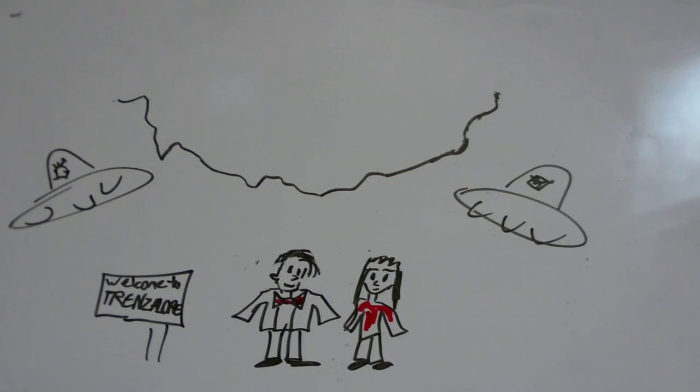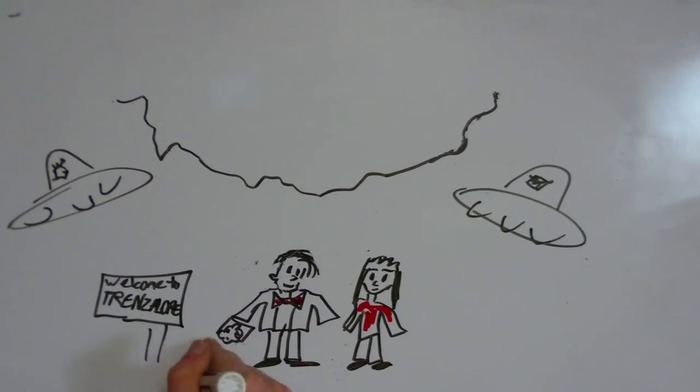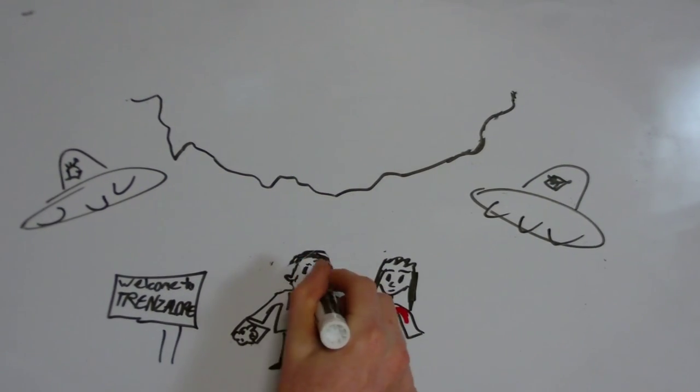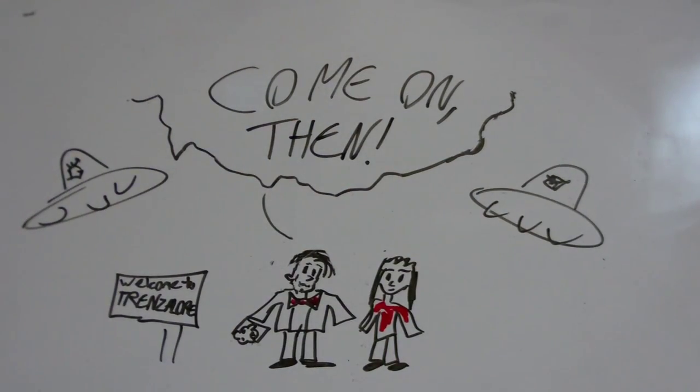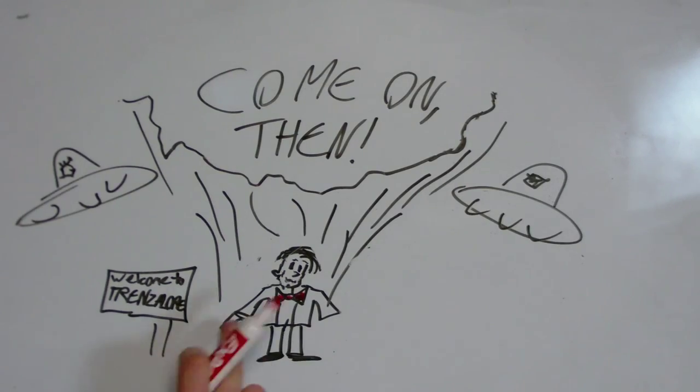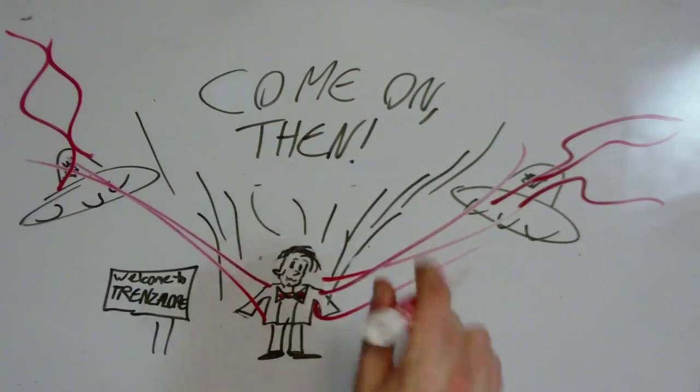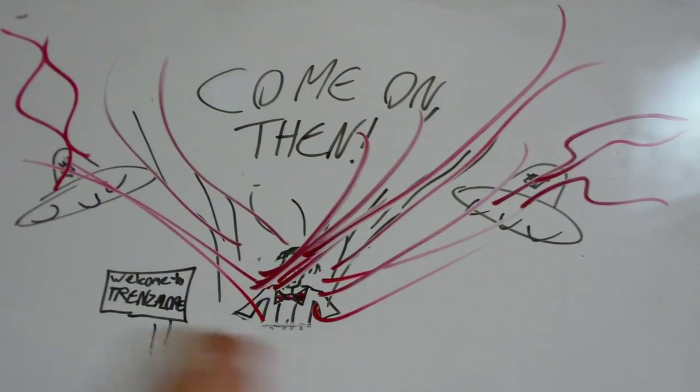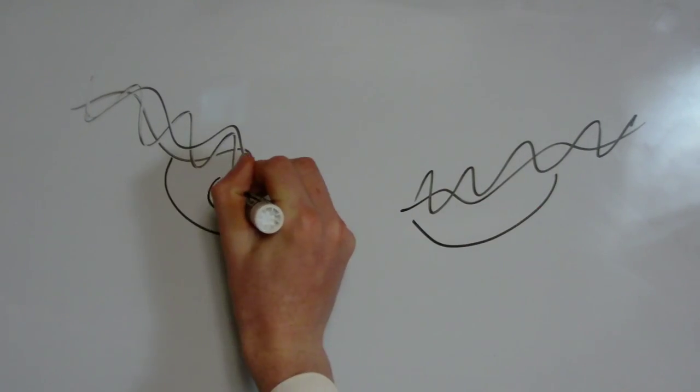I defended that planet for hundreds of years. Eventually, though, I grew too old. I had to die. But Clara saved me one last time. She convinced the Time Lords to give me the energy for another regeneration cycle. So I saved the planet. The crack closed, and I died again. A whole new set of lives. A whole new set of adventures.